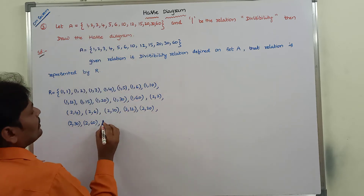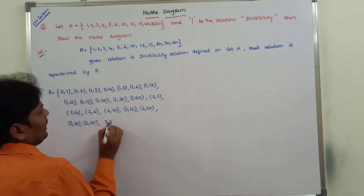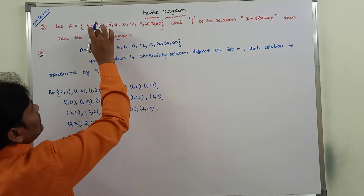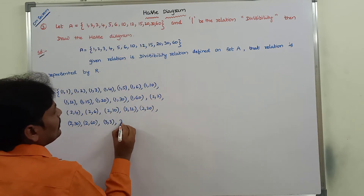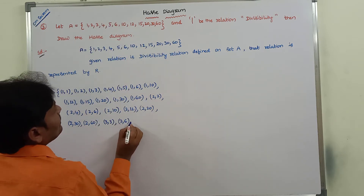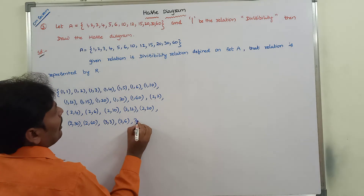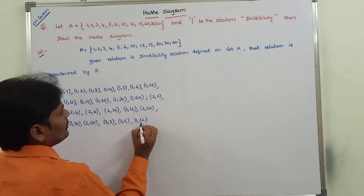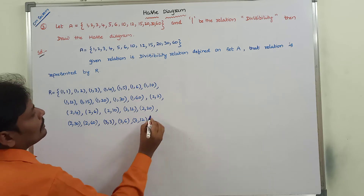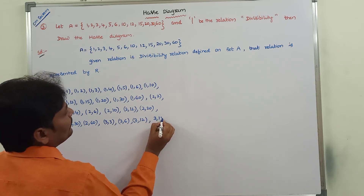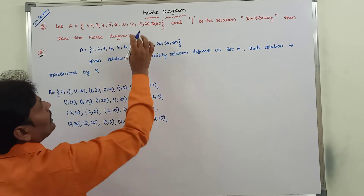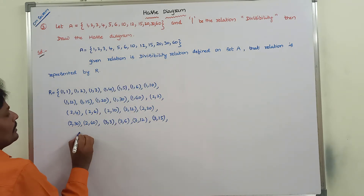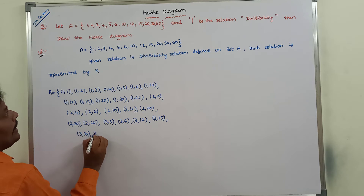Next we can go for element 3: 3 divides 3. 3 does not divide 5. 3 divides 6. 3 does not divide 10. 3 divides 12. 3 divides 15. 3 does not divide 20. 3 divides 30 and 3 divides 60.